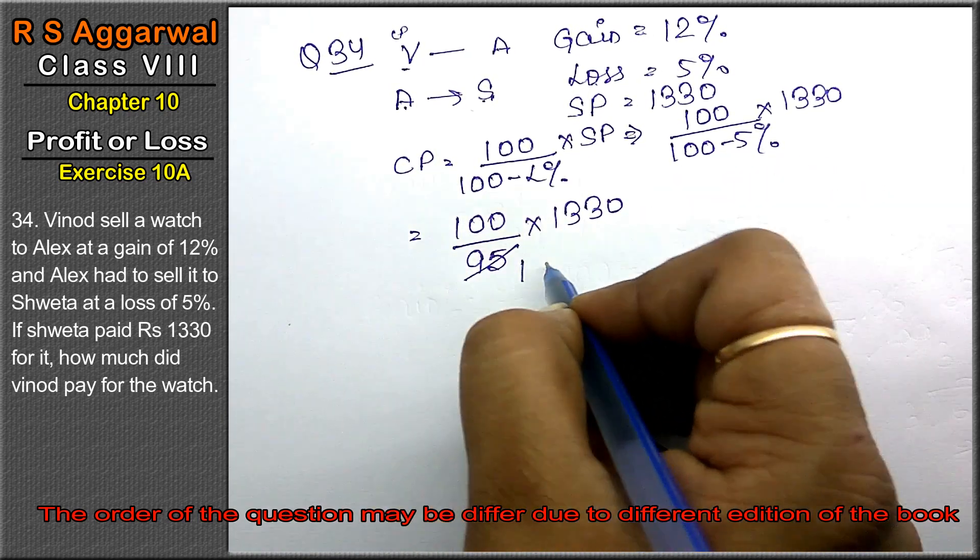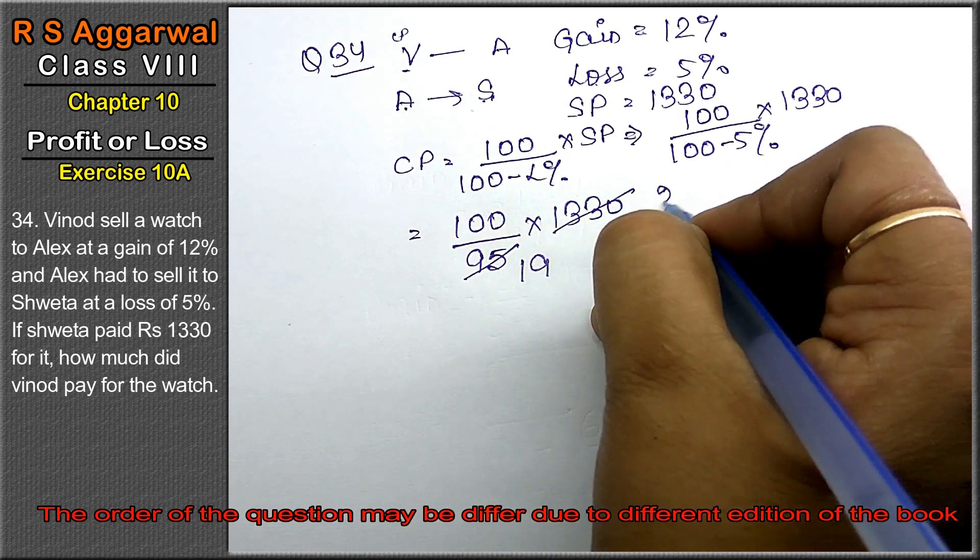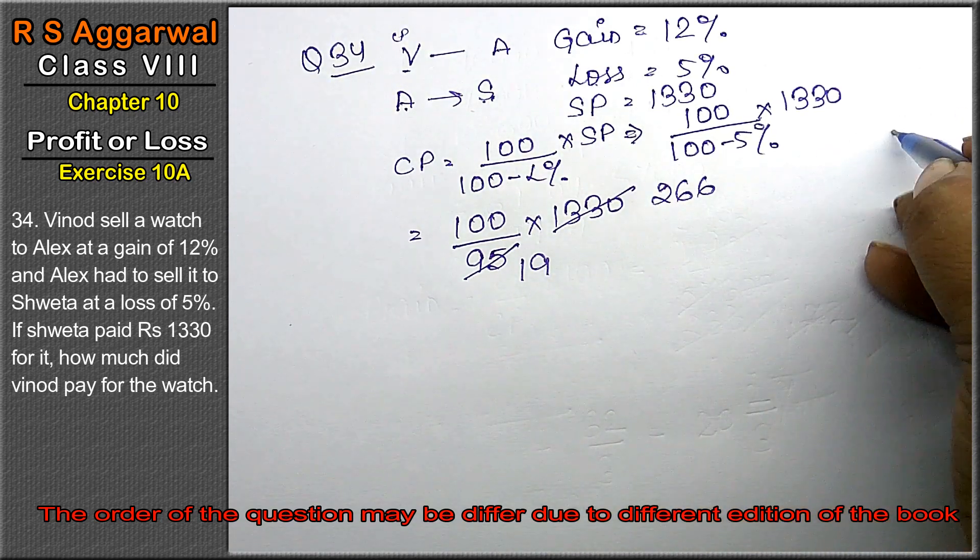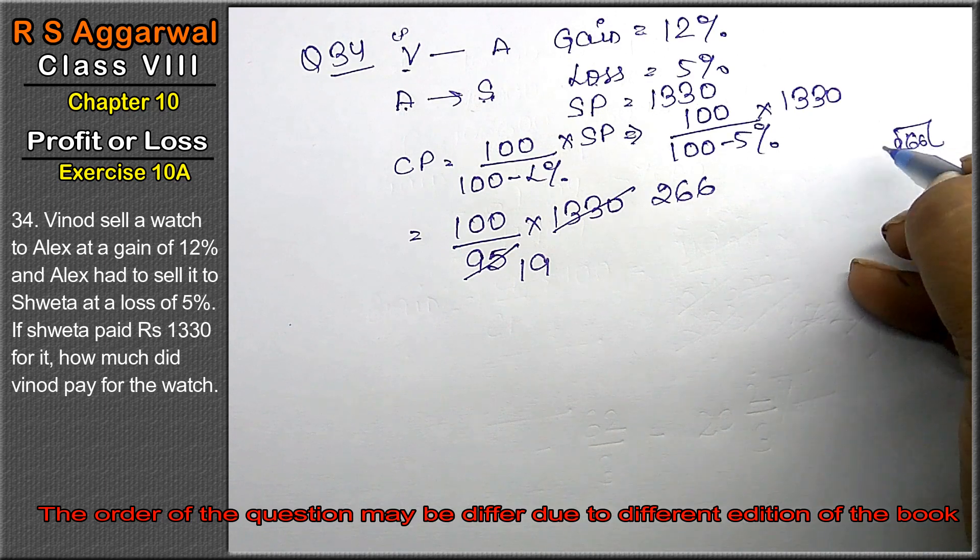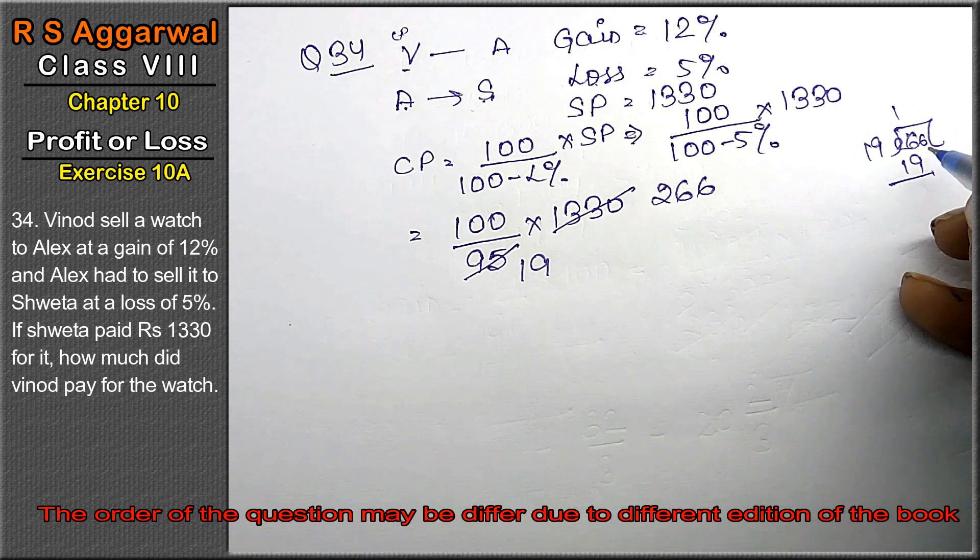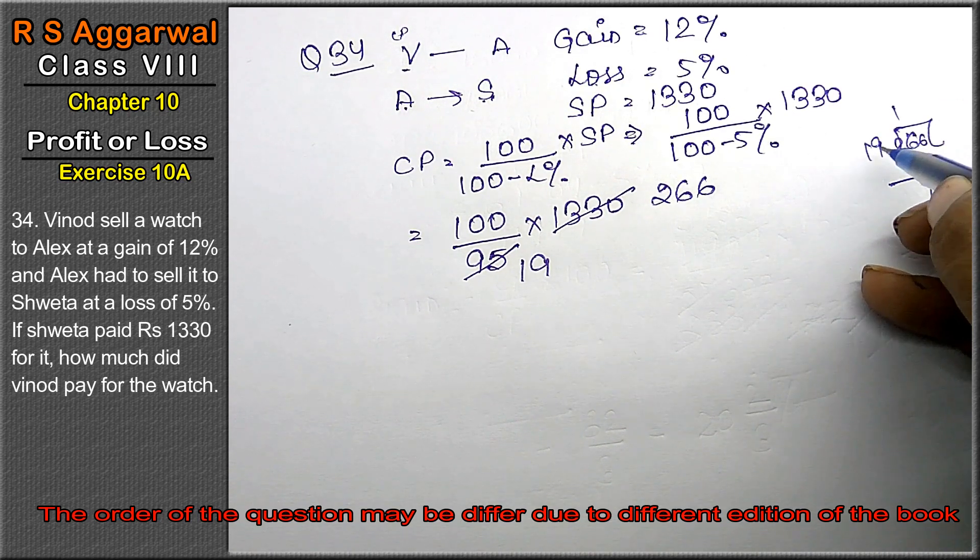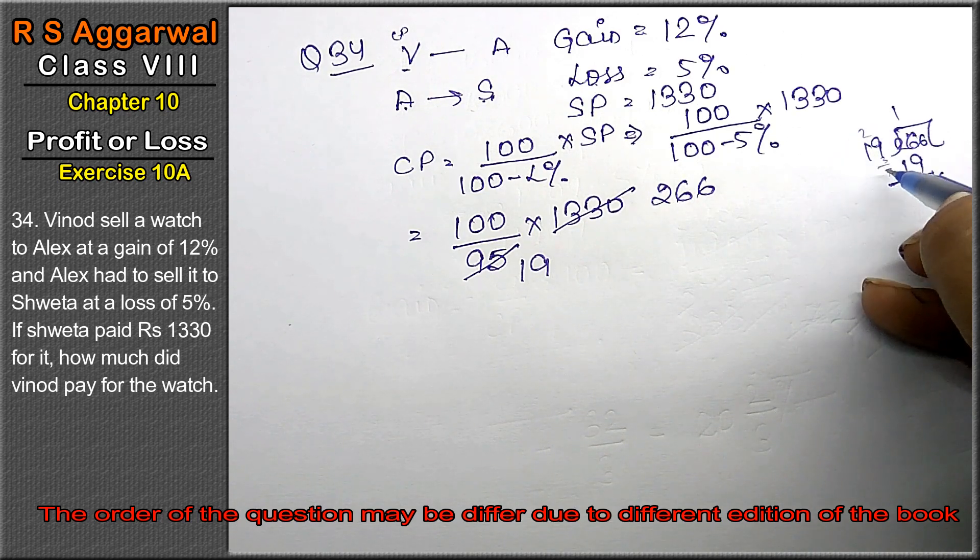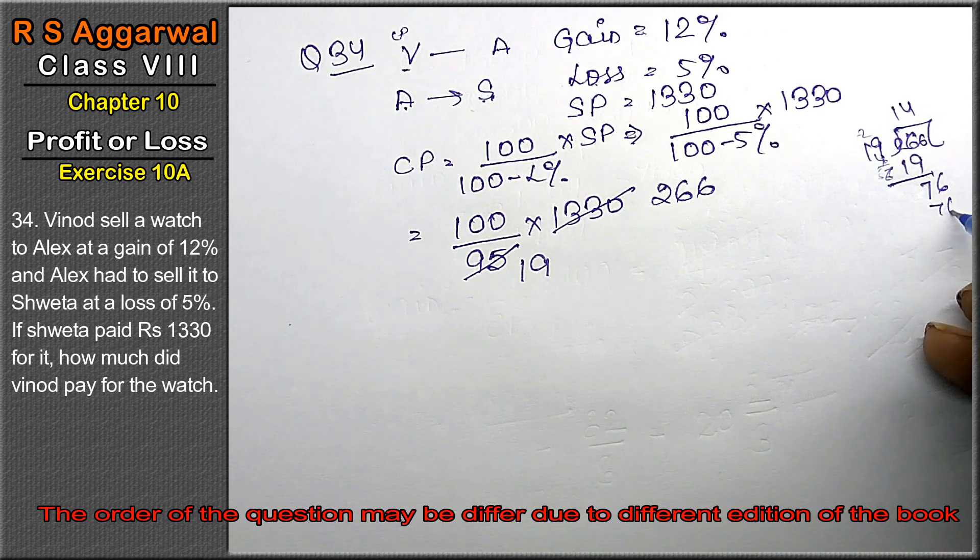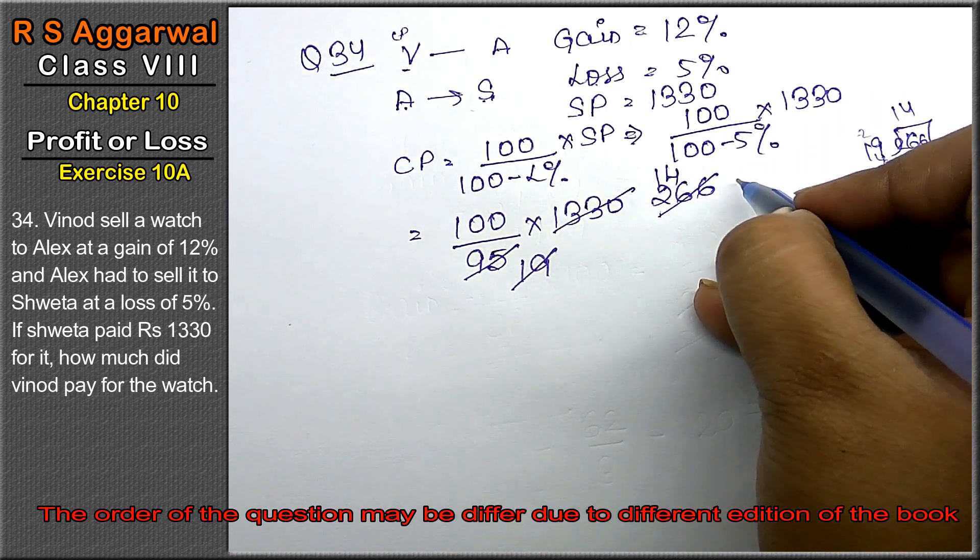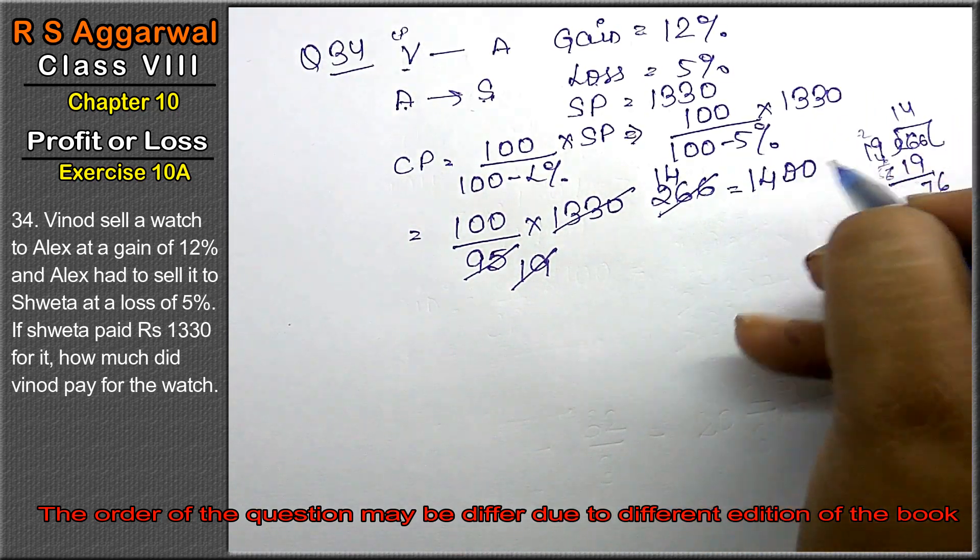5 ones are 5, 5 nines are 45, 5 twos are 10, 5 sixes are 30, 5 sixes are 30. We'll divide this by 19. 266 by 19. 19 ones are 19, 19 threes are 57, 19 fours are 76. Right friends, so 19 into 14, that means 1400 is our CP.